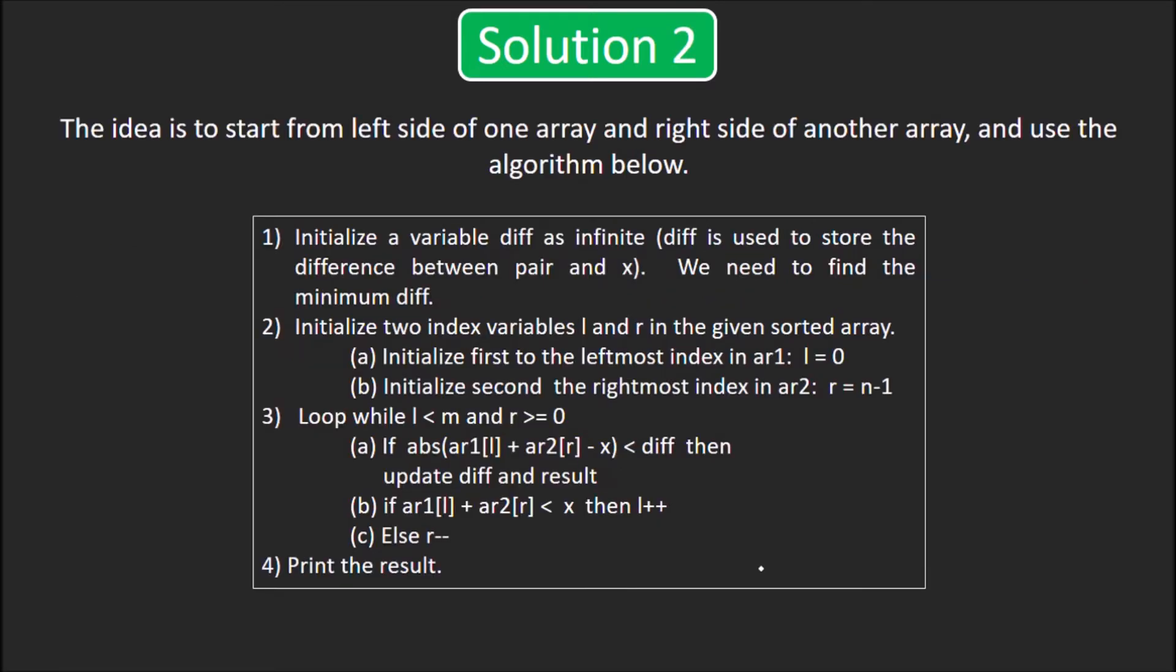Solution 2 is more optimal. The idea is to start from the left side of one array and the right side of another. We'll use the algorithm below. We keep a variable diff to store the minimum difference between the sum and x. Initially, diff will be infinite. We initialize l to the beginning of ar1 that is l = 0 and r at the end of second array that is r = n-1. Note that m and n are the sizes of the two arrays ar1 and ar2 respectively.